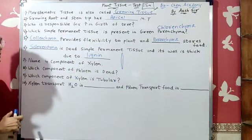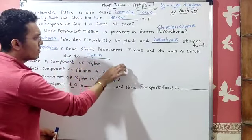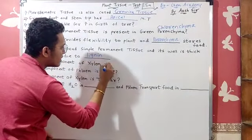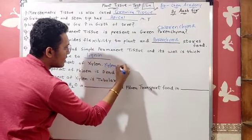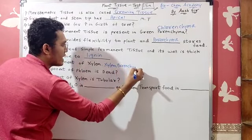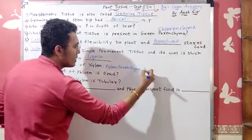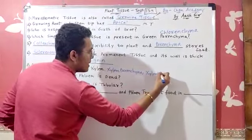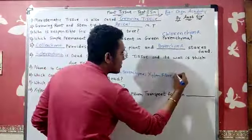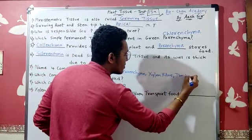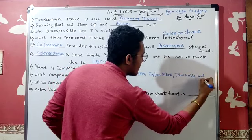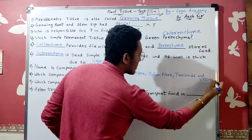Name the four components of xylem. Xylem is made up of four types of cells: xylem parenchyma, xylem fiber, tracheids, and vessels.